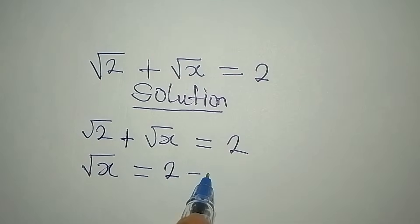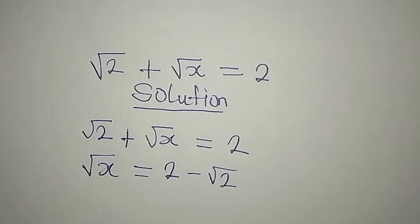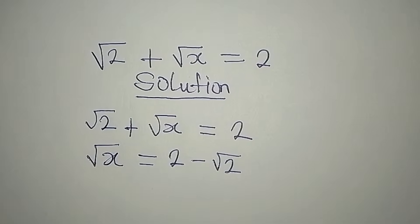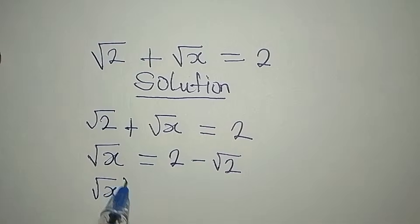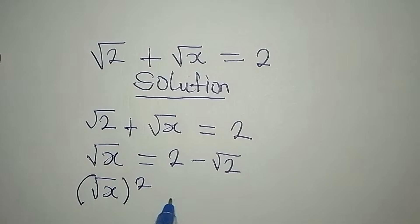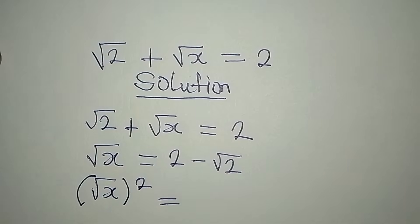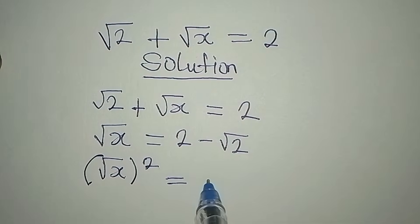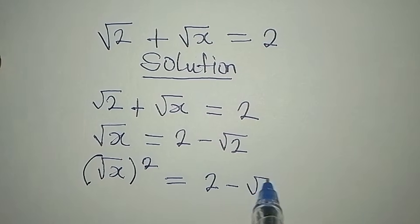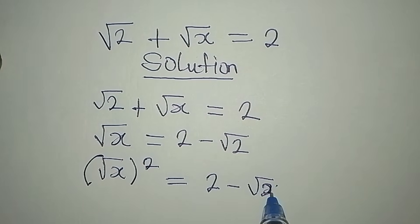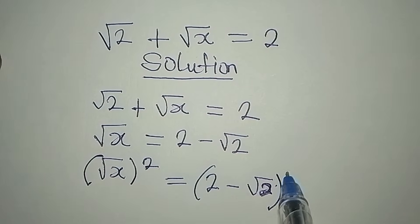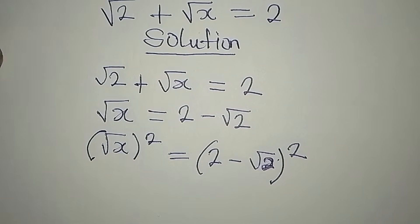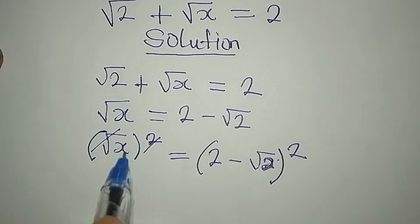This is positive, so it becomes negative on the right hand side. Now what do we do again? We try to remove this square root by squaring both sides. So since we've squared the left hand side, we have to square the right as well. We have 2, and you put this in brackets and square it.